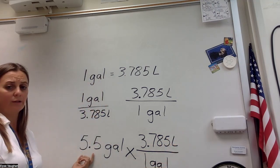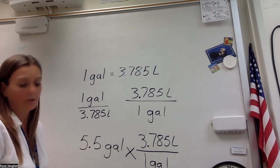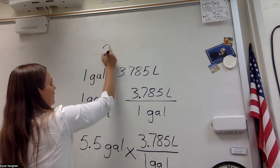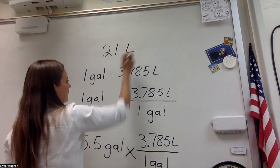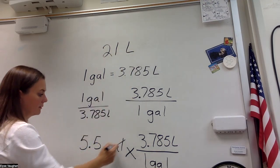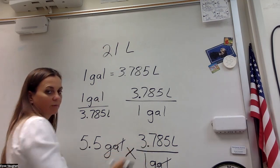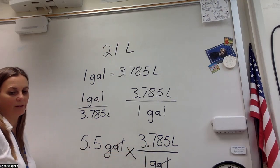And again, this has two significant figures. And so I'm going to come up with an answer of 21 liters. Because the gallons have canceled out, I have 5.5 times 3.785, and that gives me 21.